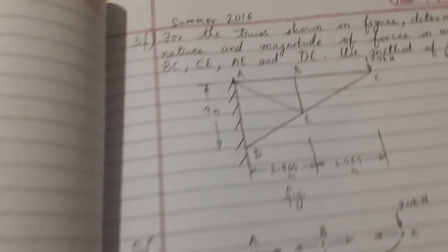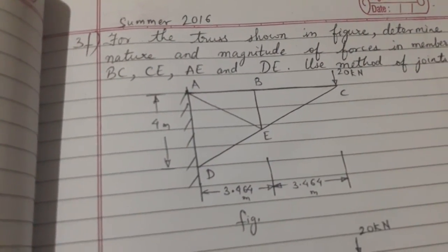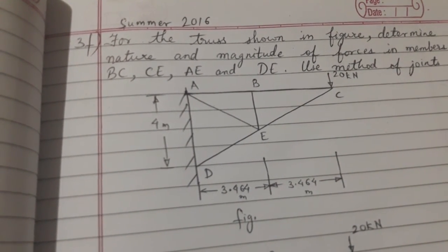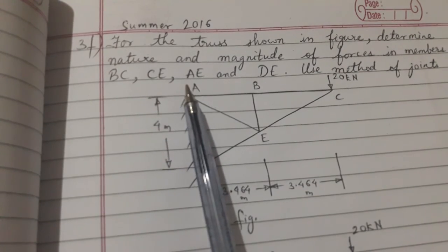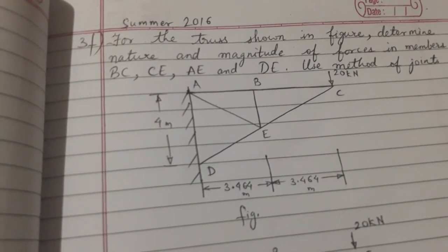This was a problem where magnitude and nature was asked. We found nature and magnitude for all the members BC, CE, AE, and DE. Please like, comment, share, and subscribe. Thanks for watching.